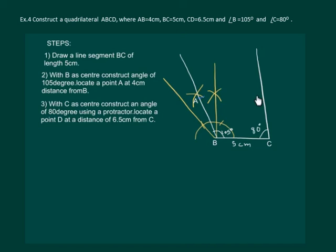After constructing 80 degrees at C, we need to locate point D on this line at a distance of 6.5 centimeters. Let us open our compass to the radius of 6.5 centimeters, mark an arc, and name it D. Join A and D.